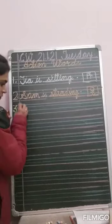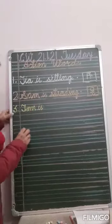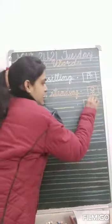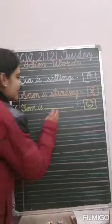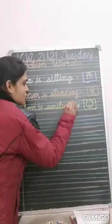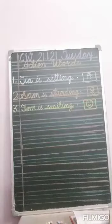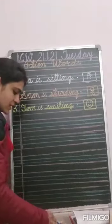Now next, number three. Tom is dash. We'll stop and see which action this is. Yes, Tom is smiling. Write down smiling. S-M-I-L-I-N-G. Tom is smiling.